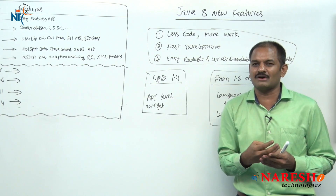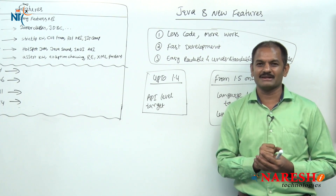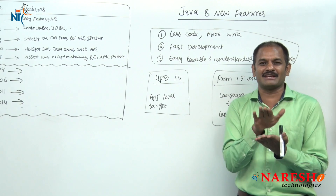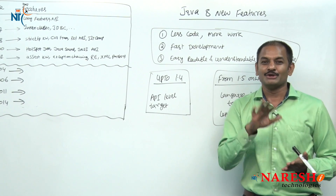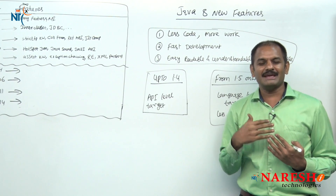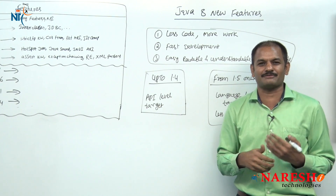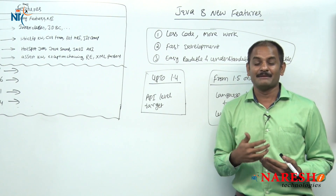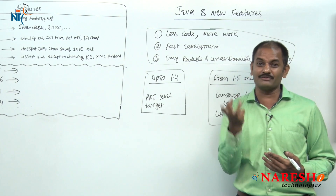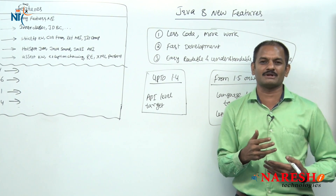Sun Microsystems in the beginning version itself gave a promise to all programmers: you do not write everything — I will write it. At the API level they are writing everything, and we are just reusing it for fast development. But still there is some API-level code we are repeatedly calling and using in our programs.